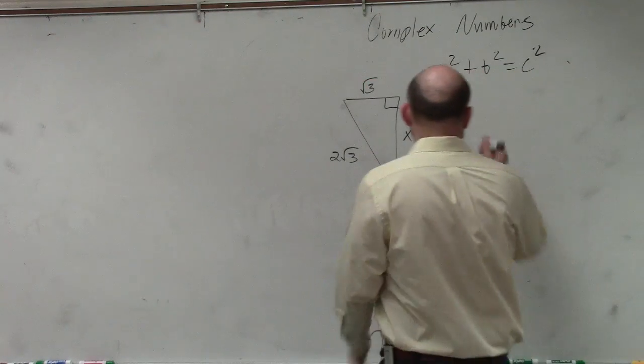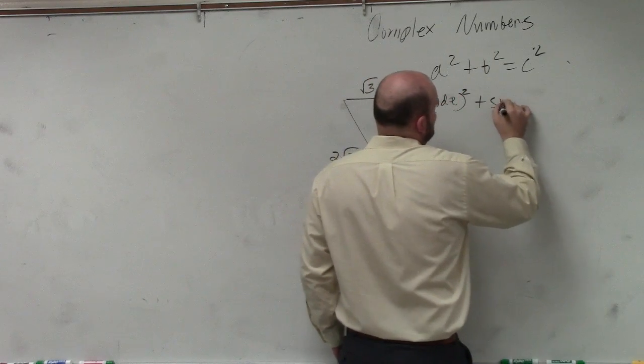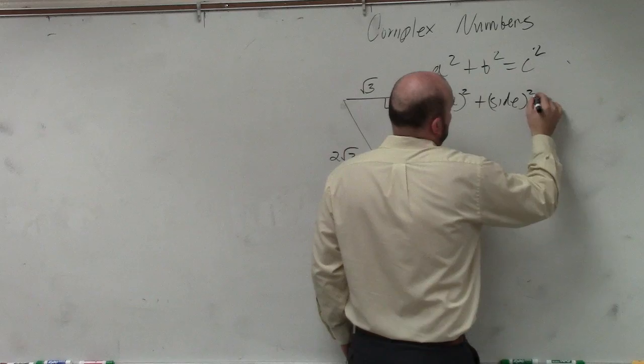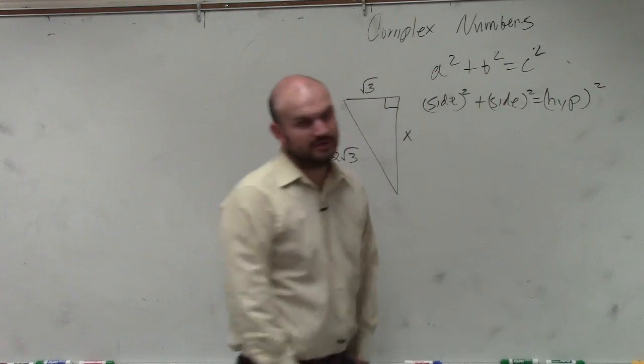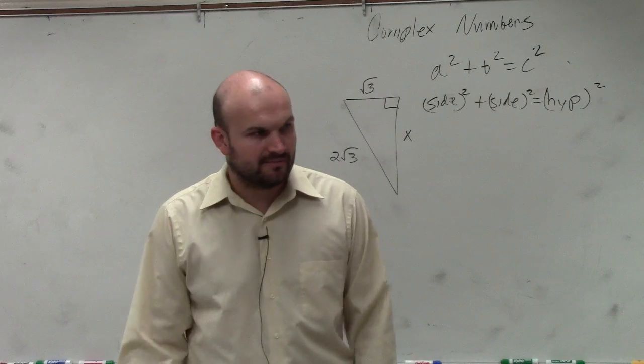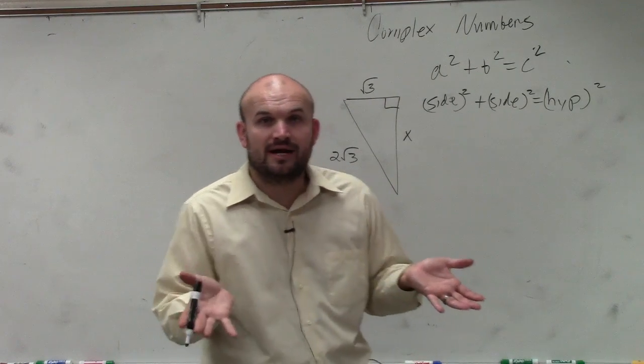So I prefer to think of this as side squared plus side squared equals hypotenuse squared. That's the way I like to think about it, because in reality, you're just taking the two sides, and all you really need to know is what is the one hypotenuse.